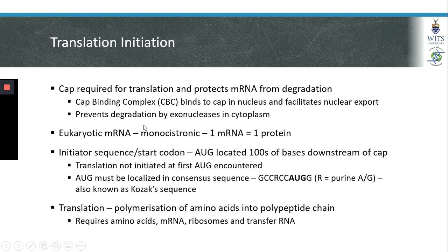With regard to translation, eukaryotic mRNAs are monocystronic. Unlike prokaryotic mRNAs, which are polycystronic, eukaryotic mRNAs will only translate one protein for each RNA strand. In prokaryotes, polycystronic RNAs contain sequence codes for multiple proteins from a single RNA transcript. Although a monocystronic RNA can be translated multiple times to produce many copies, it would only produce the same protein each time.